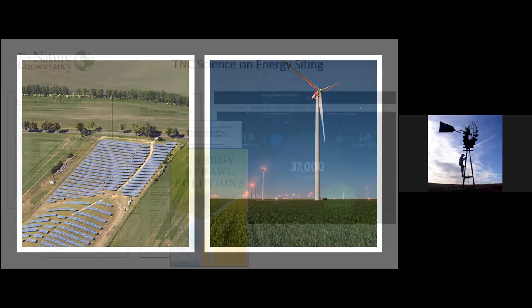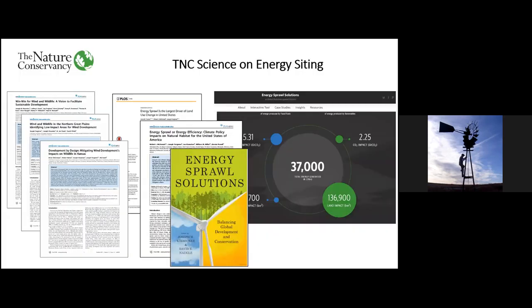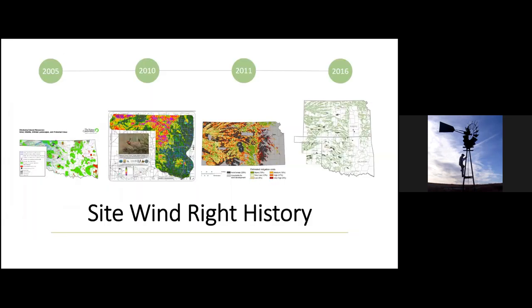The Nature Conservancy has a long history of conservation and land use planning in North America. Our scientists recognized the potential challenges and opportunities with renewable build-out in the central US some time ago. Since 2010, we have published a number of assessments on wind and wildlife interactions, both on our own and in cooperation with partner organizations. These studies really informed the Site Wind Right work you will see presented today. I'm going to turn it over to Mike Fuhrer to tell you a bit about the history of our Site Wind Right project.